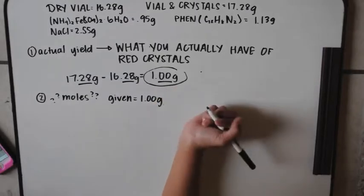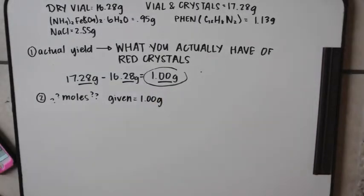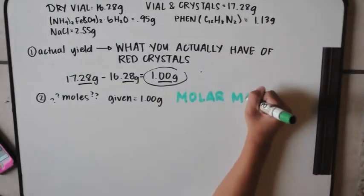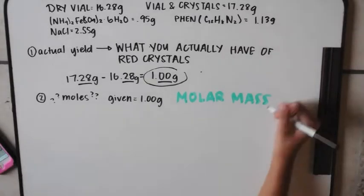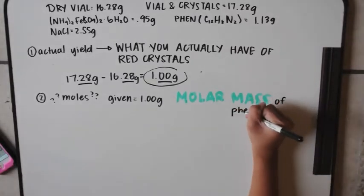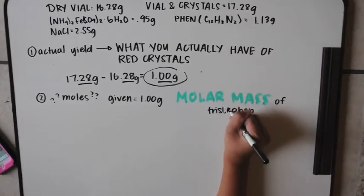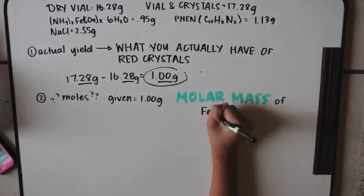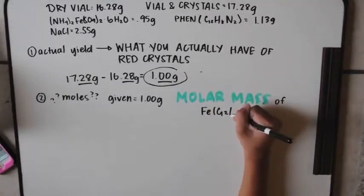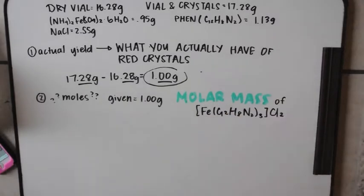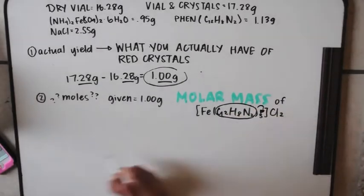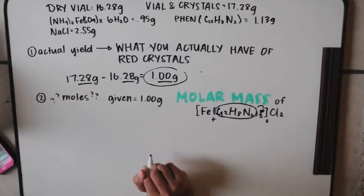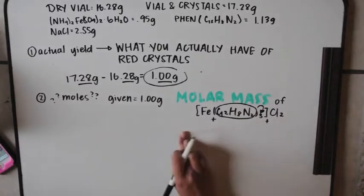Number two asks for the number of moles, and we know from number one that we have one gram. We need to know the molar mass. To find the molar mass of iron tris-phen chloride salt, we add up all the numbers — multiplying phen by three, then adding iron and chloride.